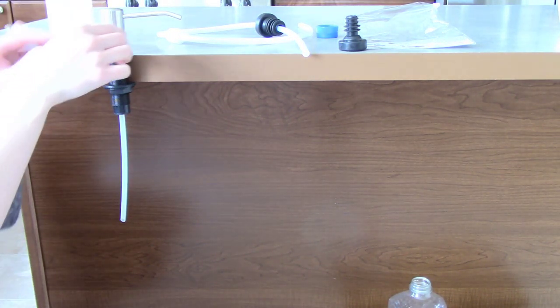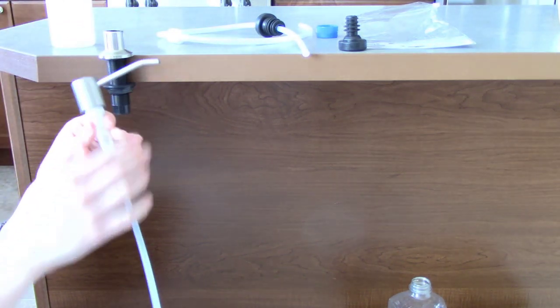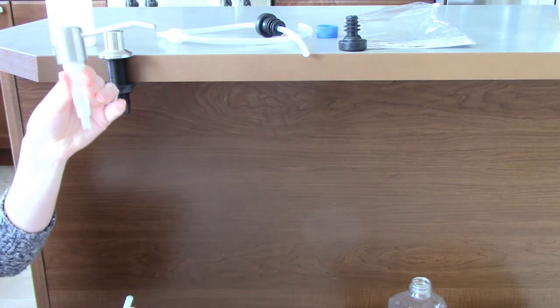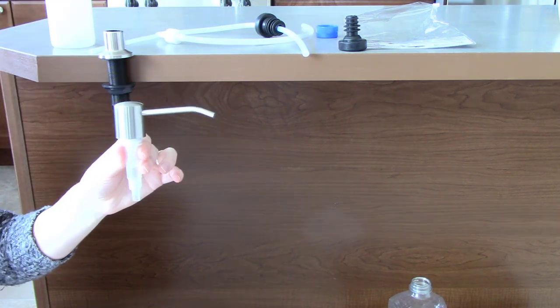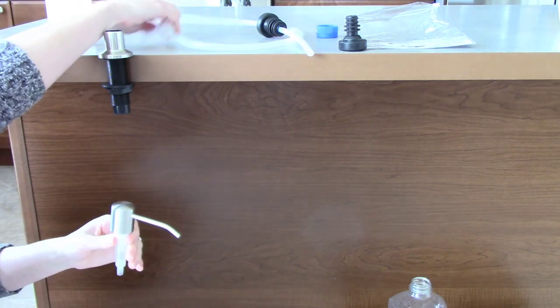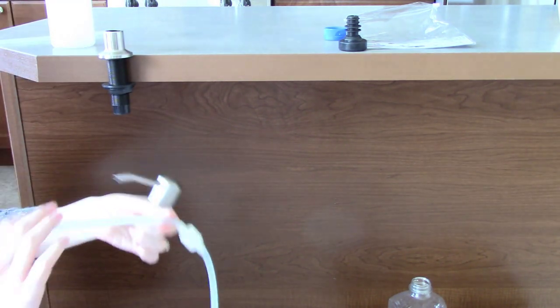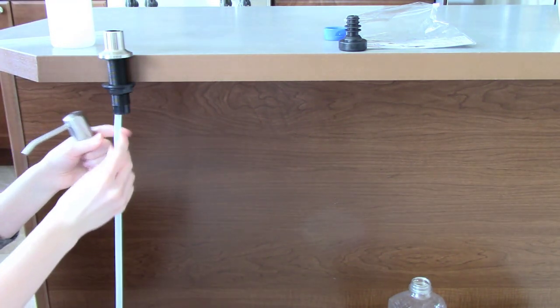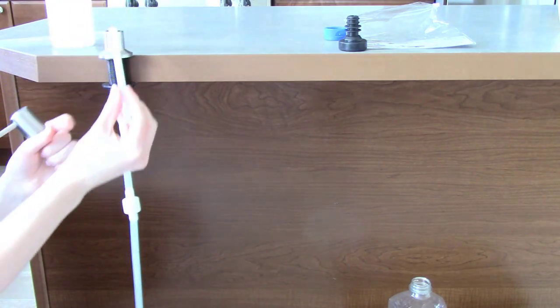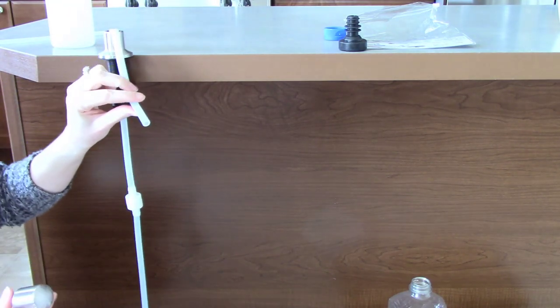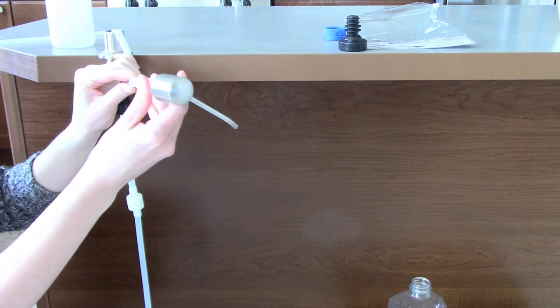Then lift the pump head and remove the tube that comes with the soap dispenser. Then thread the shorter end of the tubing up through the bottom of your soap dispenser. Grab it from the top and attach it securely to the pump head like so.